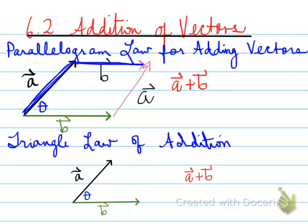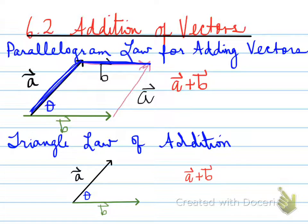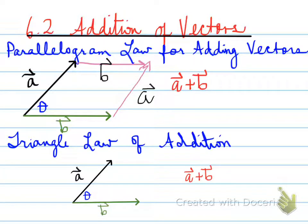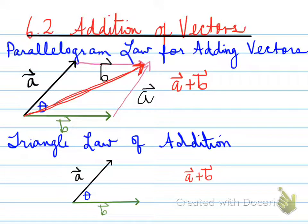Using a bright red marker, we can see from the tail of A to the head of B — this new vector I just created is known as vector A plus B.